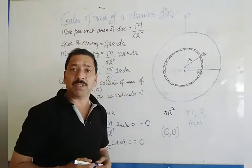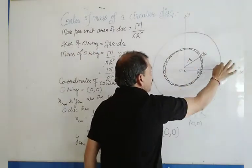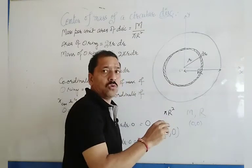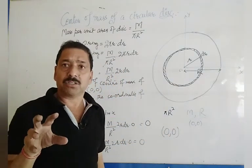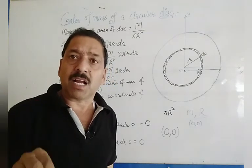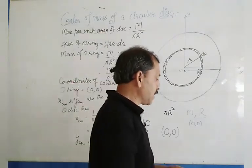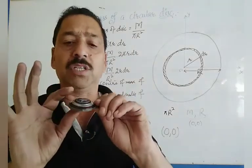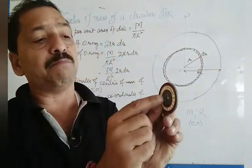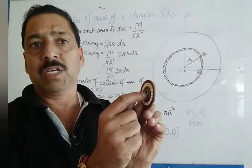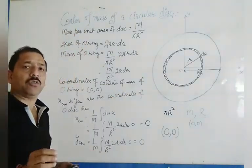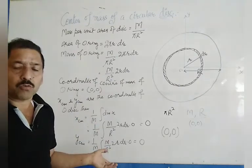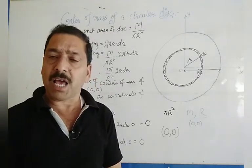This means that (0, 0) is the geometric center of the circular disk, so the center of mass lies at the geometric center of the circular disk. If this is a circular disk, its center of mass lies exactly at its center, and the position vector is (0, 0). This was all about how to find the center of mass of a circular disk of mass M and radius R.